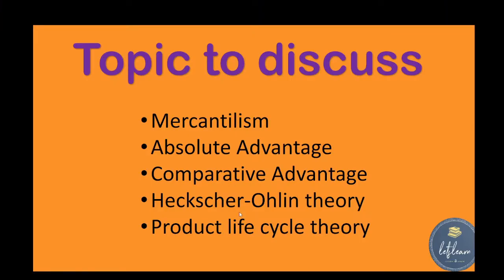Today we discussed two topics: mercantilism theory and absolute advantage theory. In mercantilism theory, only gold and silver are given importance, and a country focuses more on gaining gold by exporting rather than importing. In absolute advantage theory, given by Adam Smith, a country should produce goods that can be more efficiently produced by them and import less efficiently produced goods from other countries. We can learn comparative advantage theory and product life cycle theory in the next video.